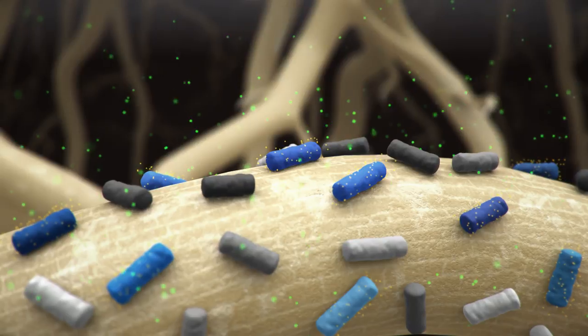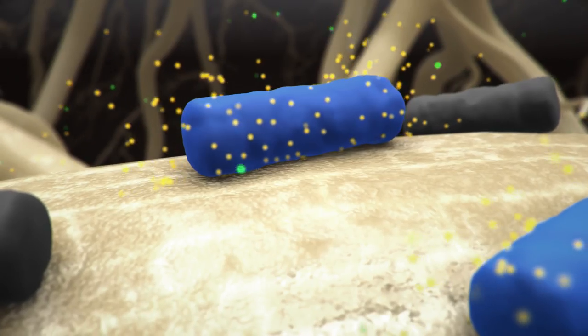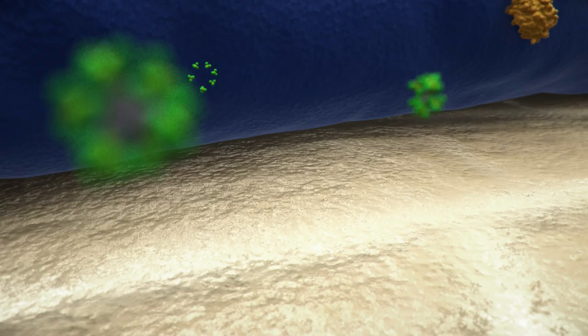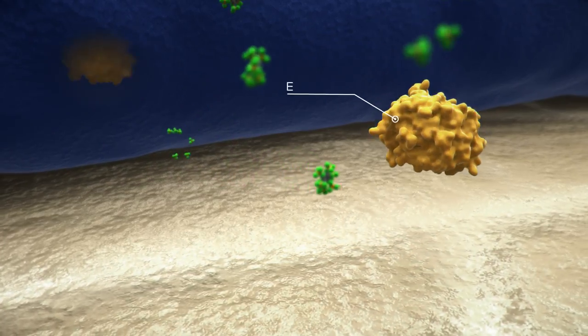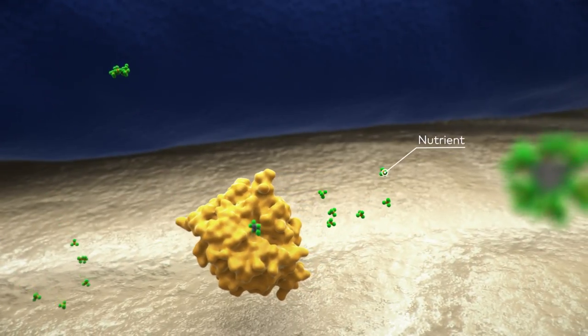They can help crops grow by making it easier for the roots to take up nutrients and by preventing diseases. This enables us to reduce the use of chemical fertilizers and pesticides, and to produce healthier food.